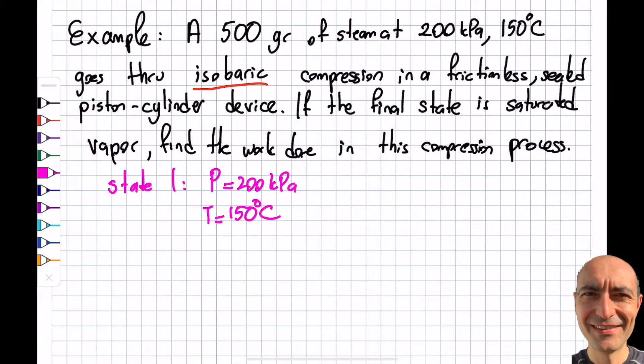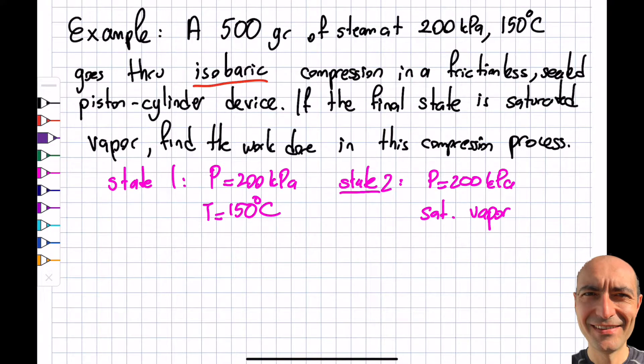What about state 2? State 2 says that P is still the same because it's an isobaric process, and this is a saturated vapor. That's what I have - 100% saturated vapor, 0% saturated liquid, obviously.